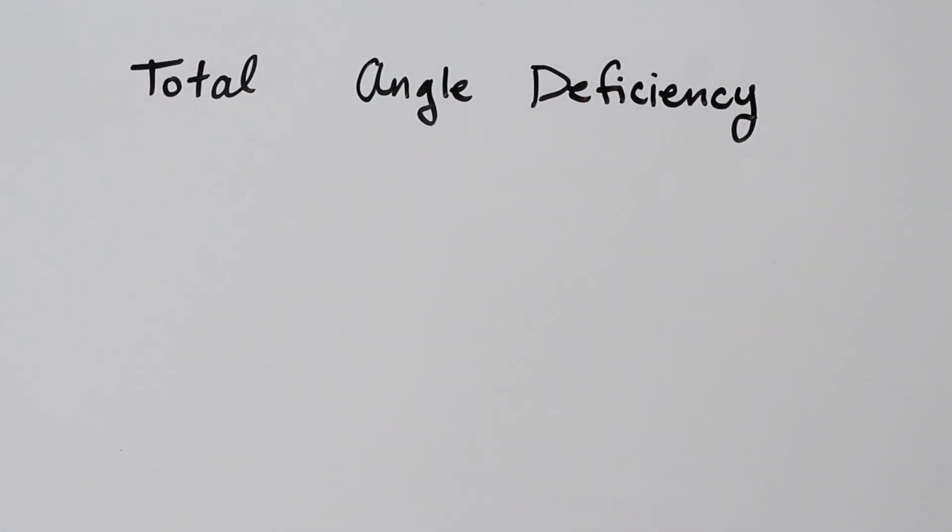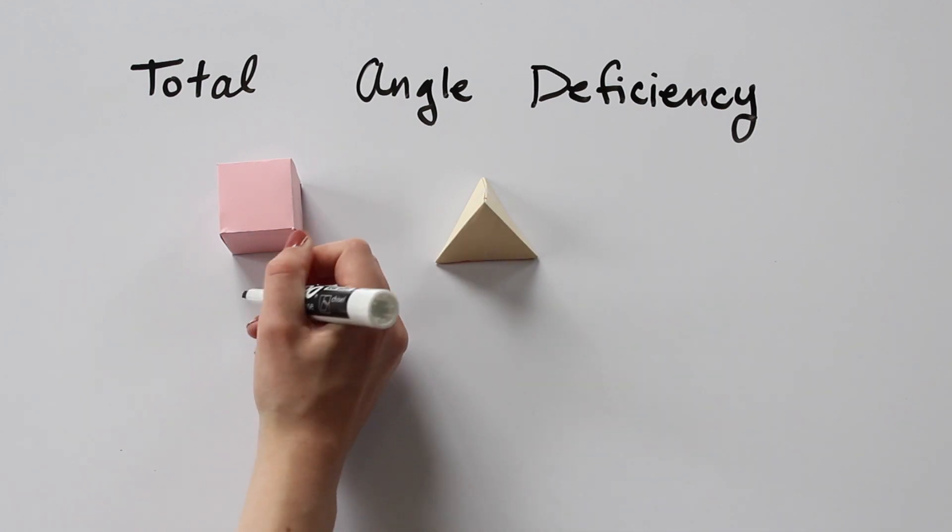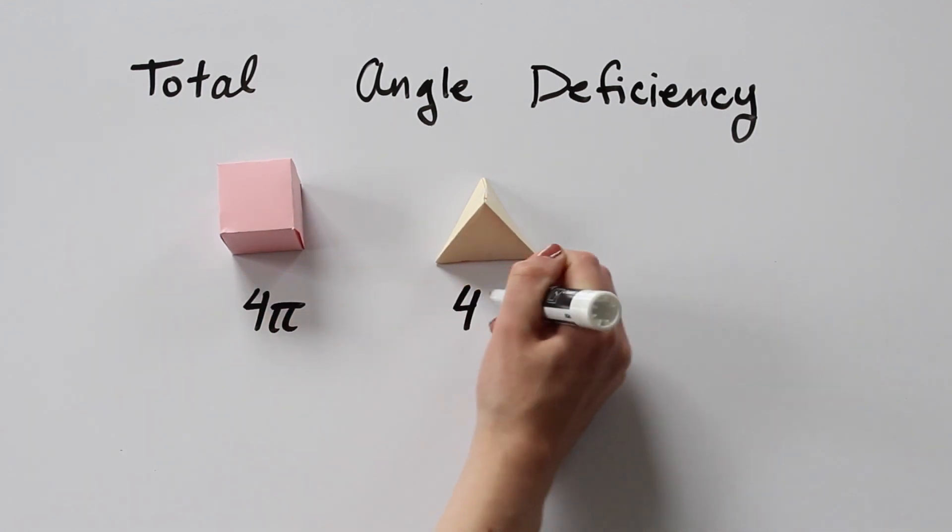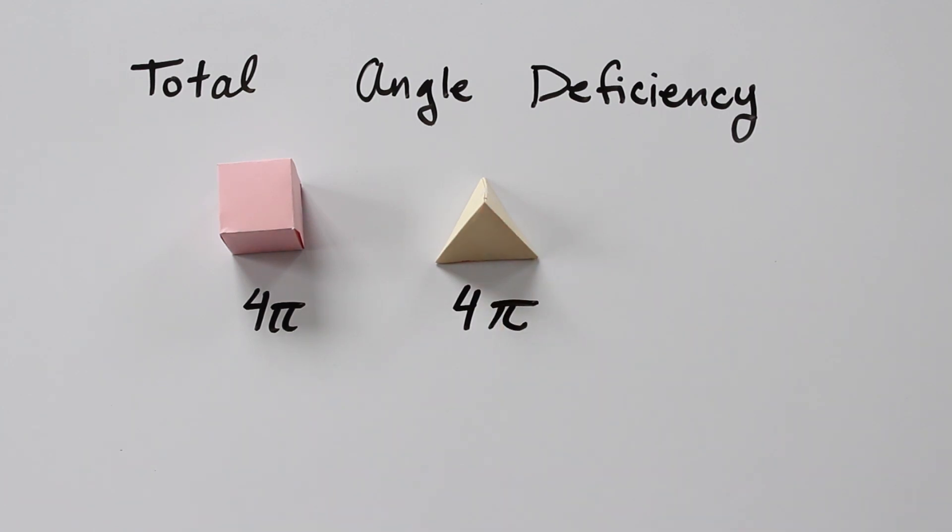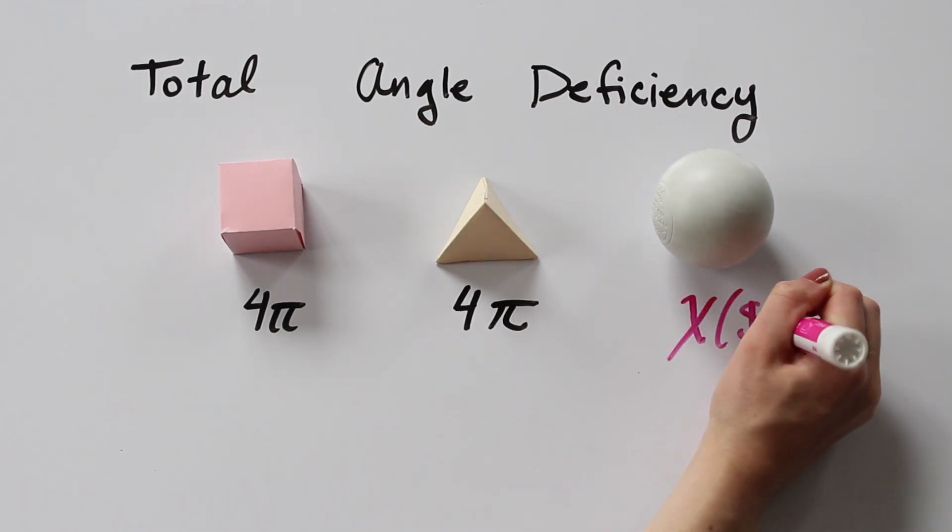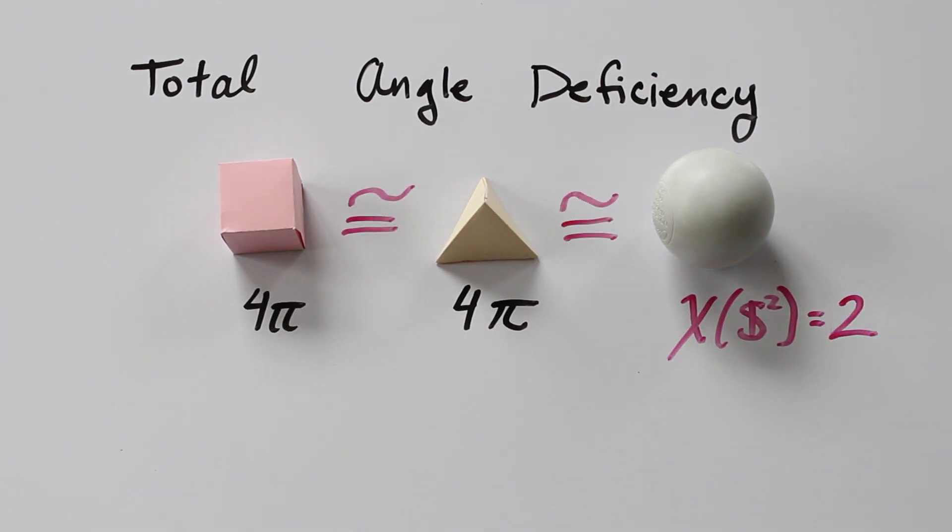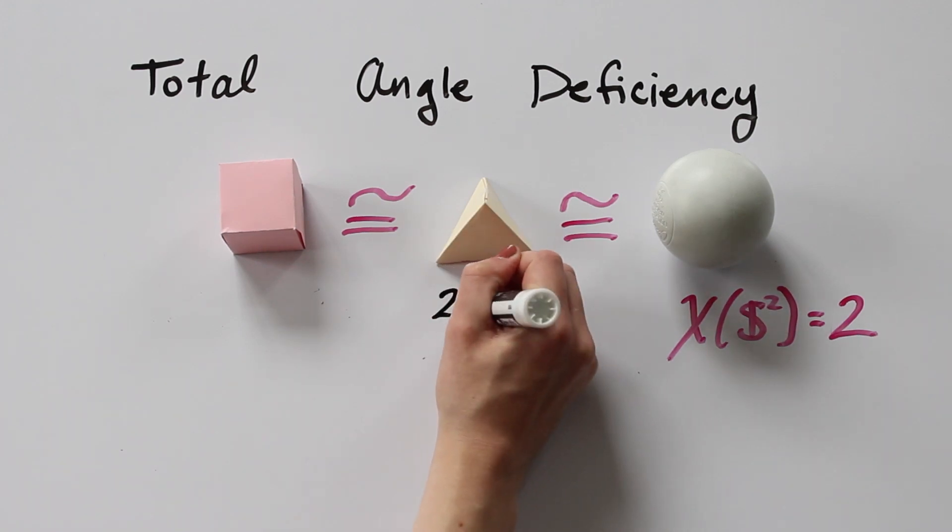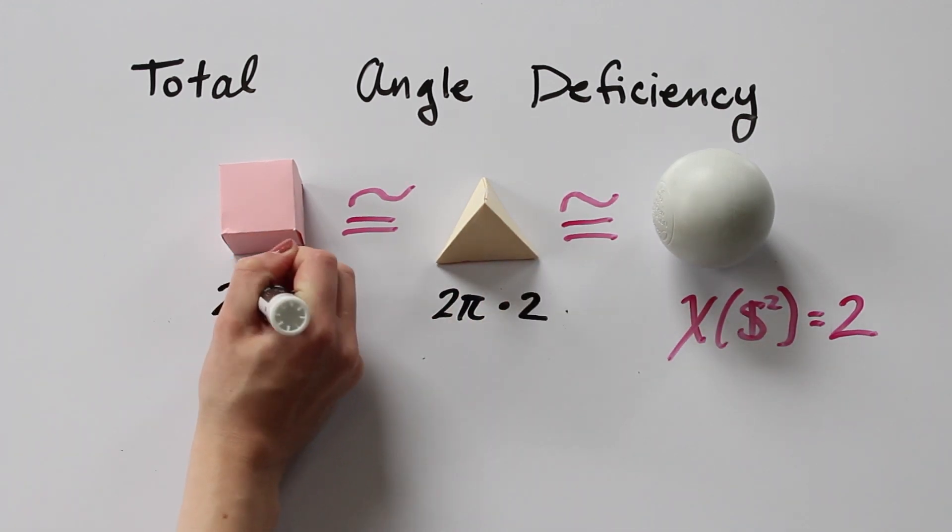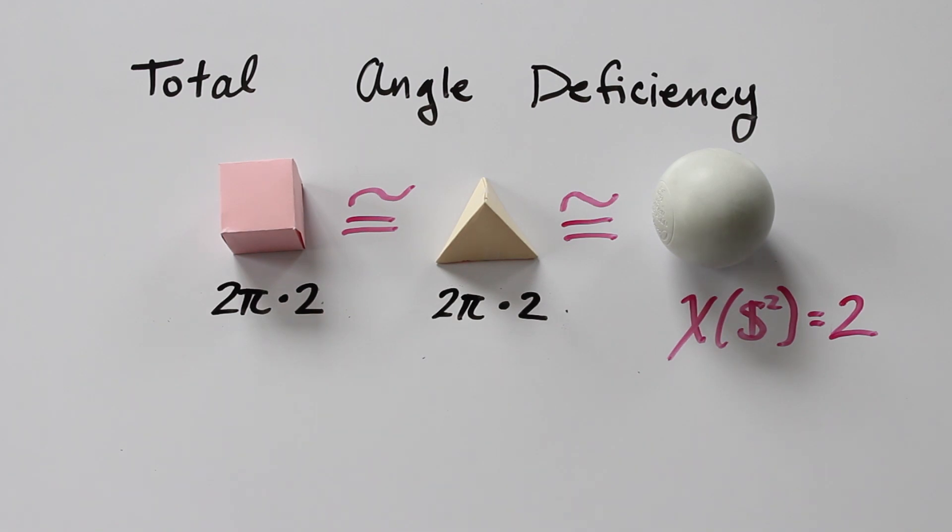So we found that even though the cube and the tetrahedron have different numbers of vertices and different angle deficiencies, they have the same total angle deficiency. If we put the sphere in the picture, the sphere has an Euler characteristic of 2. And we can rewrite 4 pi as 2 pi times 2. And we remember that the cube and the tetrahedron are both homeomorphic to the sphere.